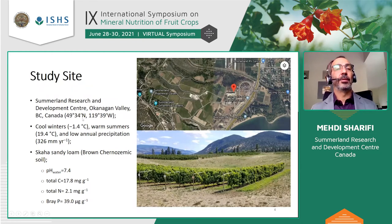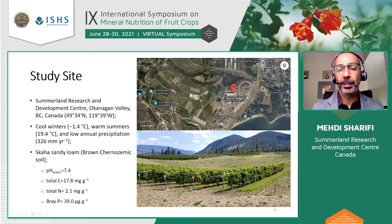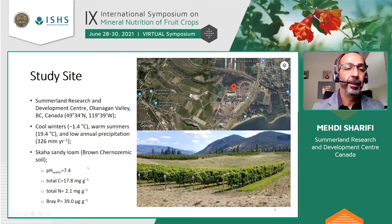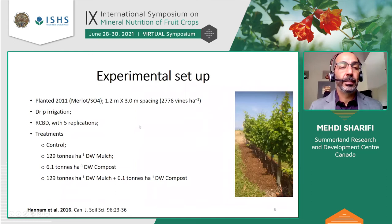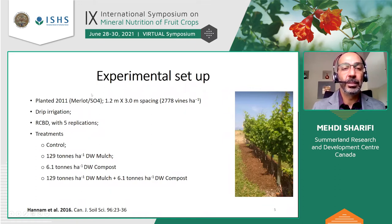The site is located at Summerland Research and Development Center, Okanagan Valley, British Columbia, Canada. It's a semi-arid region with cool winters, warm summers, and low annual precipitation — about 300 millimeters per year. The soil is sandy loam with pH close to neutral, carbon 1.7 percent, total nitrogen at 2.51 milligrams per gram. The grape block was planted in 2011 — Merlot on SO4 rootstock, which is a drought-resistant rootstock, with spacing of 1.2 meters by 3 meters and drip irrigation.